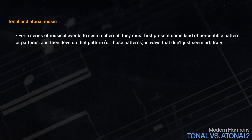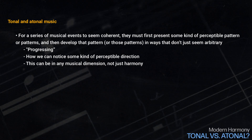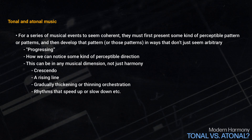This is why, in my composition book, I have a chapter called Progressing. I'm not referring here to just conventional harmonic progressions, but in a larger sense, to how we can notice some kind of perceptible direction. This can be in any musical parameter, not just harmony. Simple examples might include things like a crescendo, a rising line, gradually thickening or thinning orchestration, rhythms that speed up or slow down, and so forth. And in real music, these progressions are often combined. For example, combining progressively more dissonant harmony with a crescendo makes the increase of tension more potent and the music more expressive.